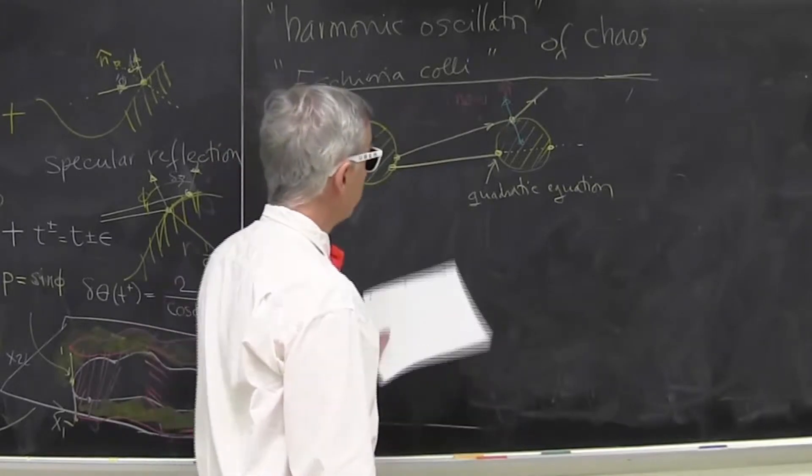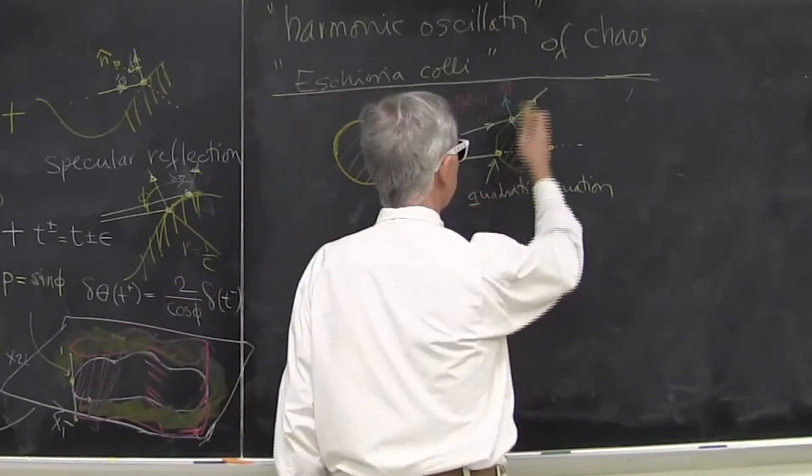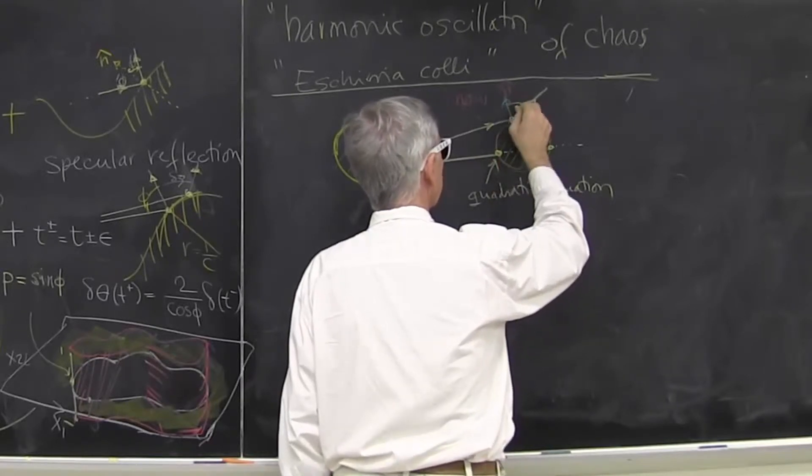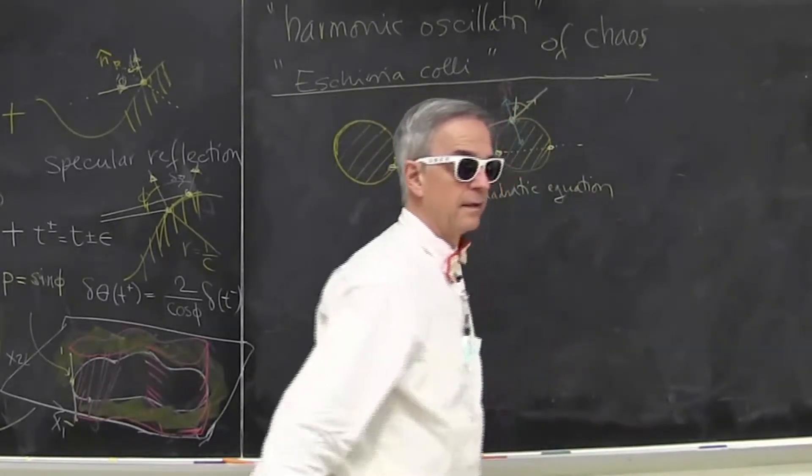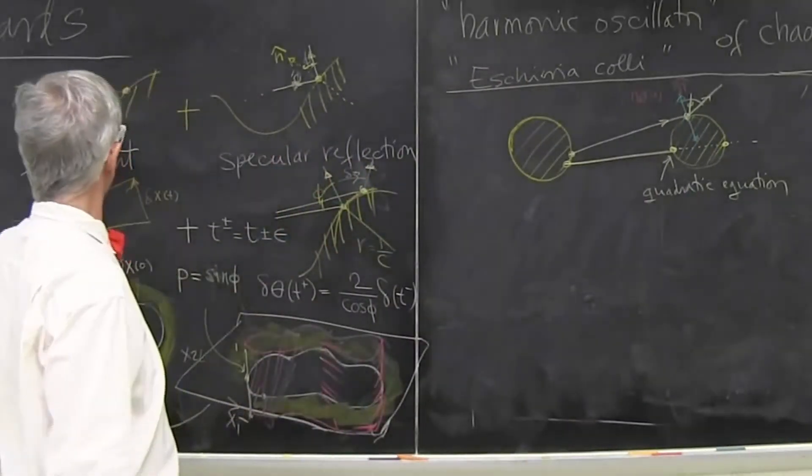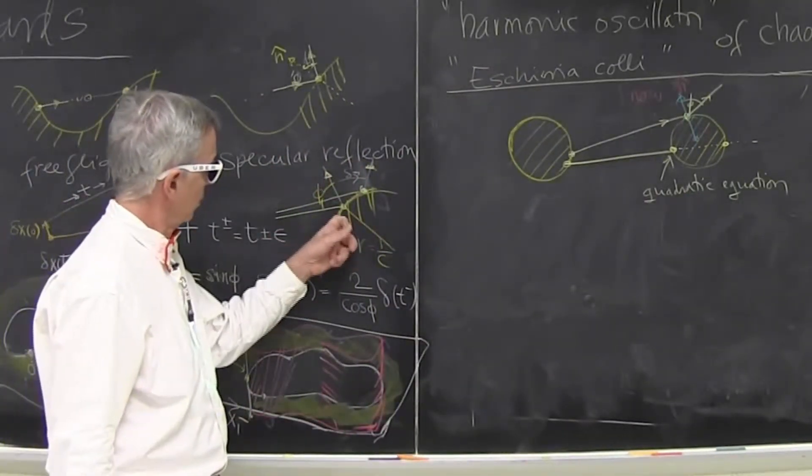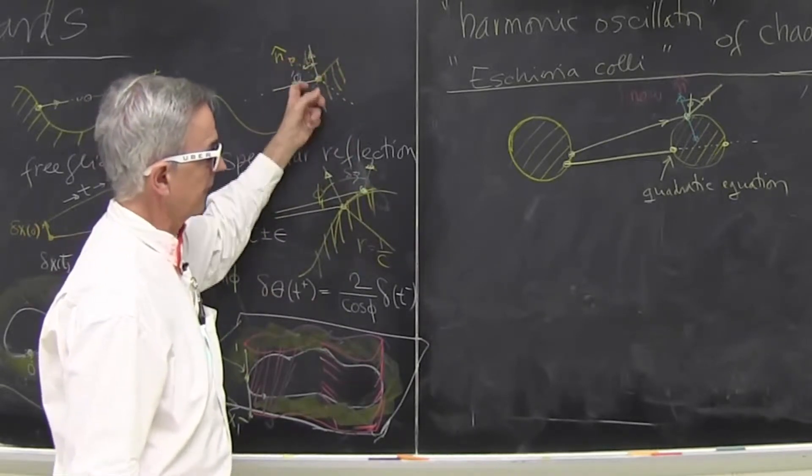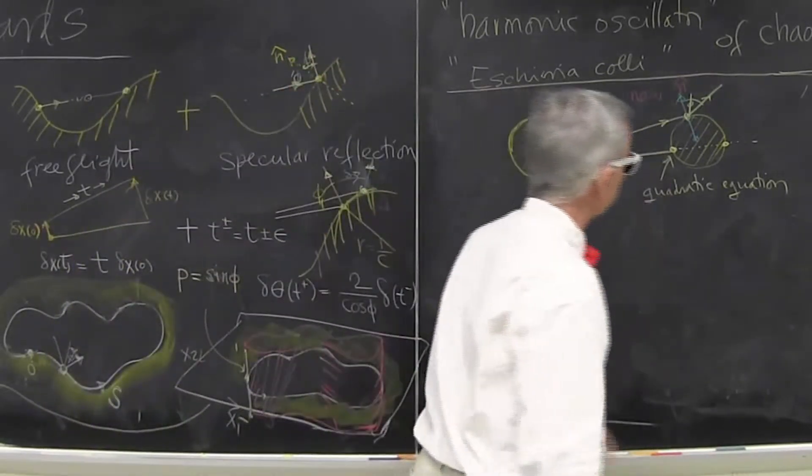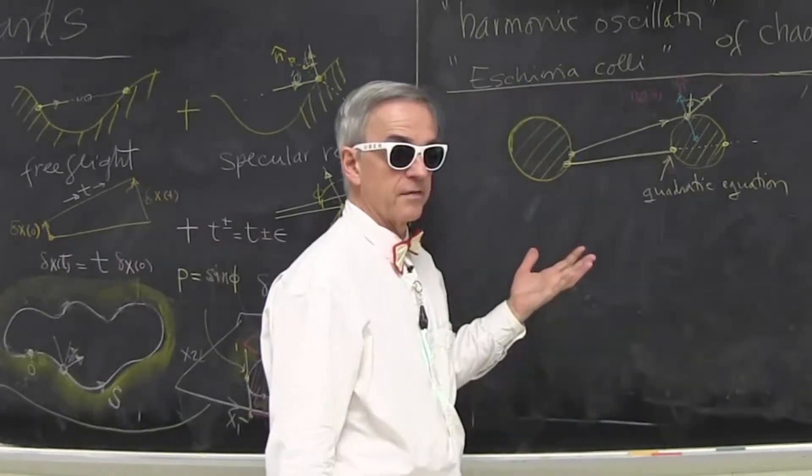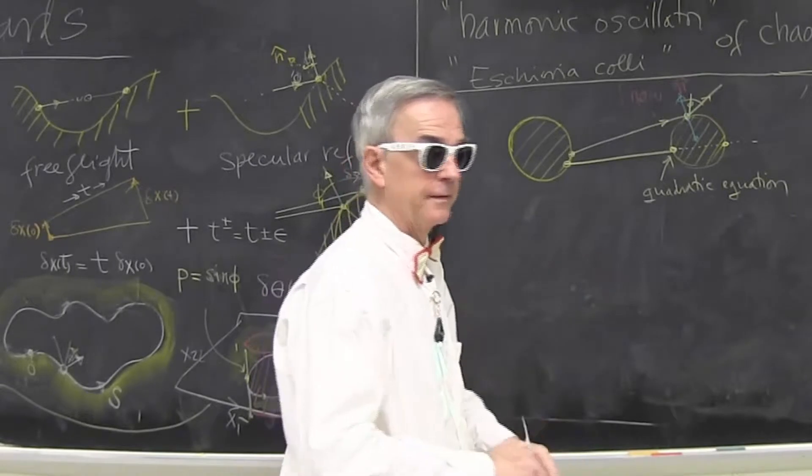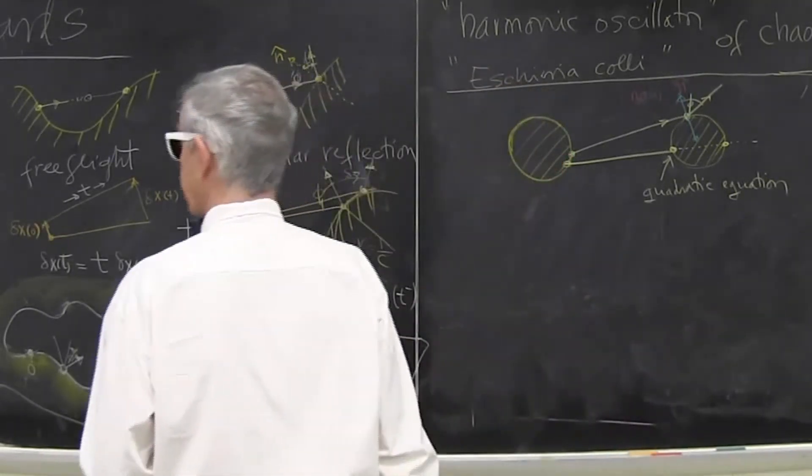And you immediately know everything else, because once you have this point and you have the radius, you can compute this angle phi. So you know both the distance and you know the reflection, specular reflection, just by solving a quadratic equation. It can't be simpler. So you can really do this. And so that's the dynamics.